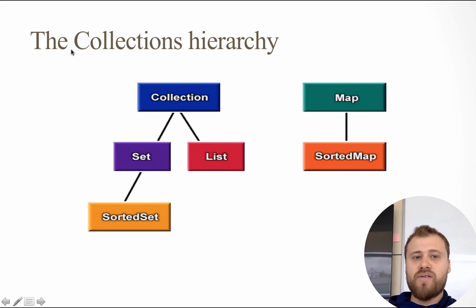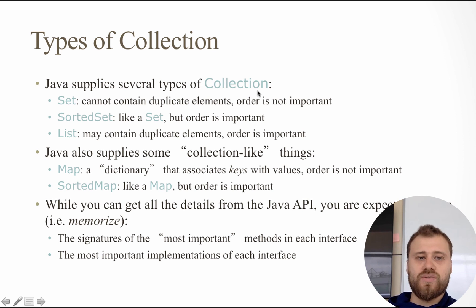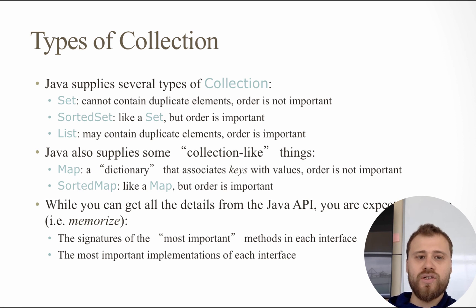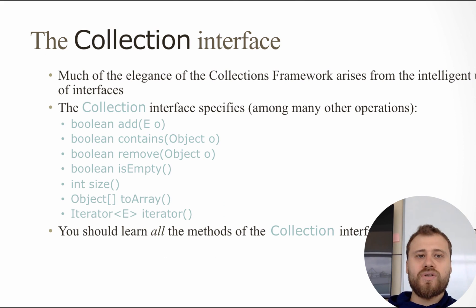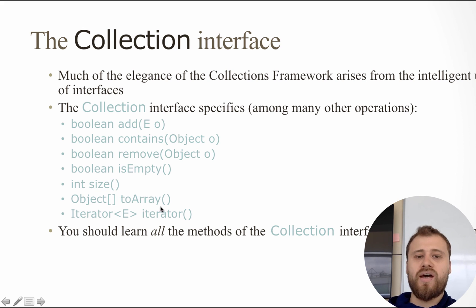That's why JDK has several collection interfaces. The first one is Collection and the second is Map. Collection is separated into two groups: Set and List, and Map has an implementation — SortedMap. Java supplies several types of collections: List stores all items as a sequence, may contain duplicate elements, order is important, you may access an item randomly, but when searching for an exact item you need to iterate from start to end. All of the collection interfaces derive from the Collection interface, which has add, contains, remove, isEmpty, size, toArray, and iterator methods.